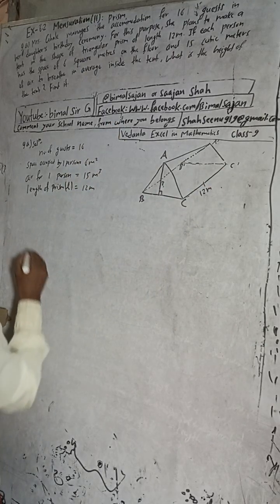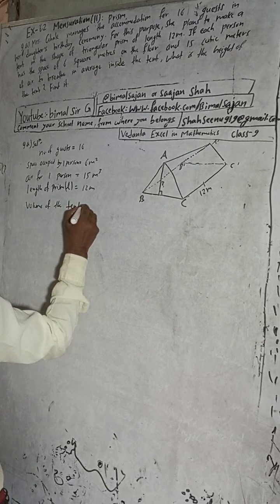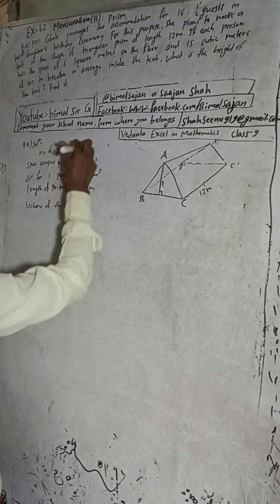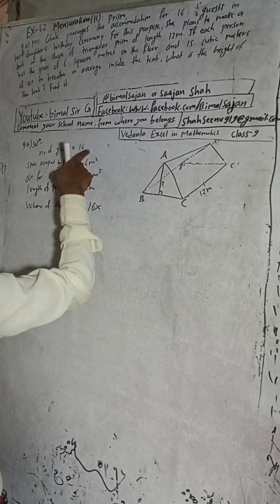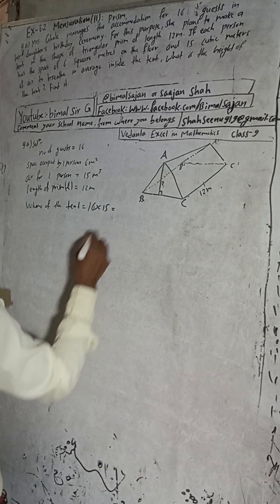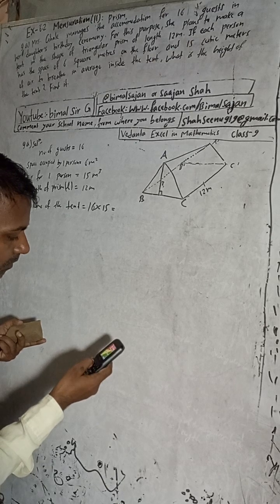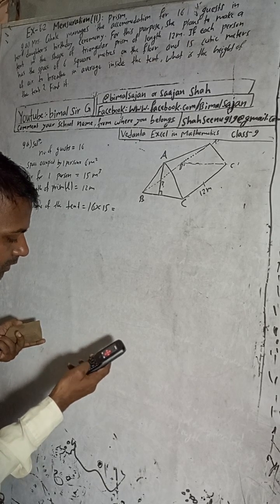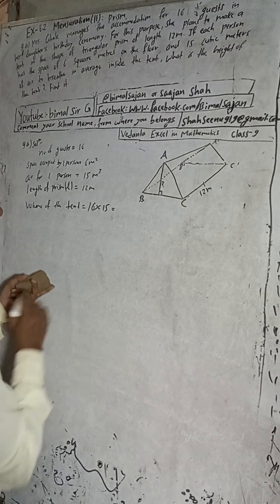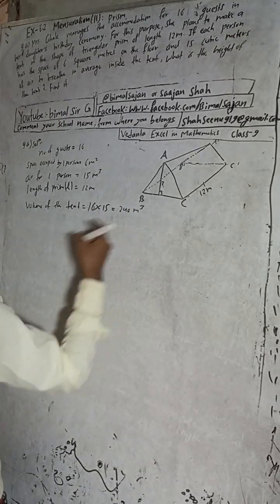Now we can find the volume of the tent. Volume of the tent equals number of guests multiplied by air per person: 16 × 15 = 240 cubic meters. So the volume of the tent is 240 m³.